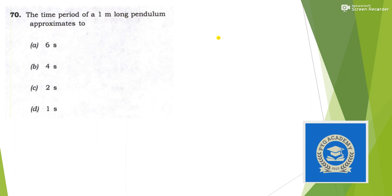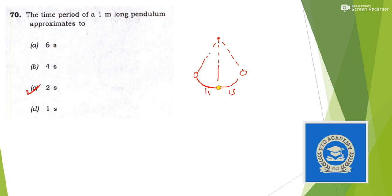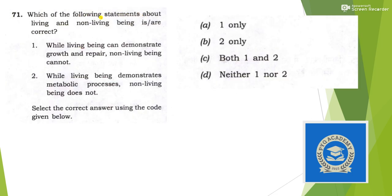Next: the time period of a one-meter-long pendulum approximates to — easy question. The pendulum takes one second to swing to one side and one second to return, giving a total time period of 2 seconds. Answer is option C.